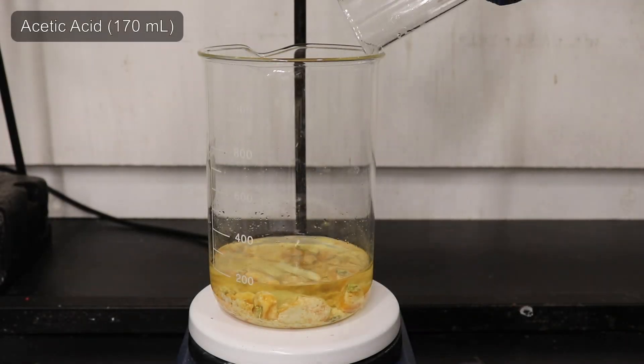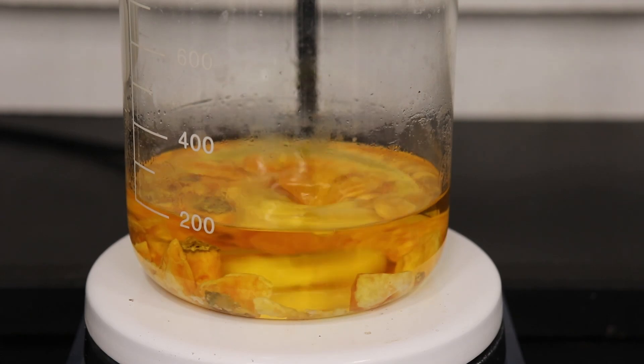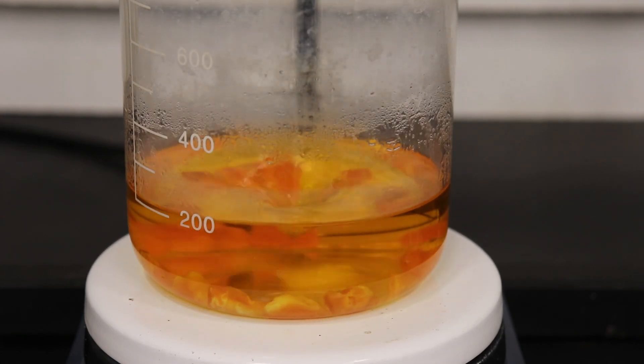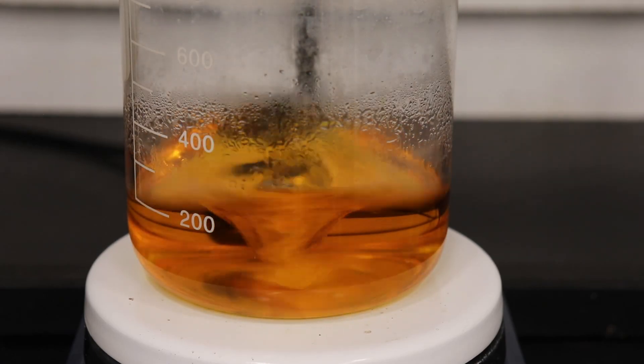The next step is to recrystallize the distillate from a mixture of acetic acid and water. I added 170 mL of glacial acetic acid and heated until all material was fully dissolved.